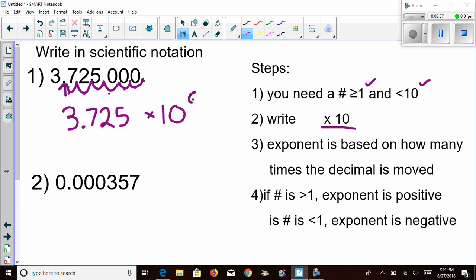So I'm going to go ahead and write a six there. And the next thing we have to decide is was our original number greater than one? Well, 3,725,000 is definitely greater than one. Therefore, my exponent is positive. So this is my answer. This is how you write that number in scientific notation.